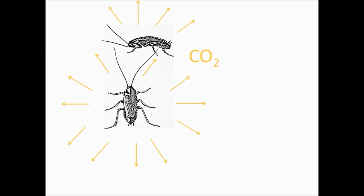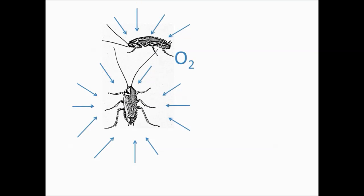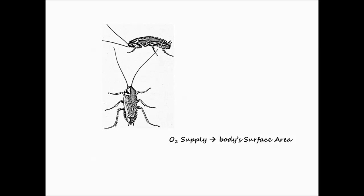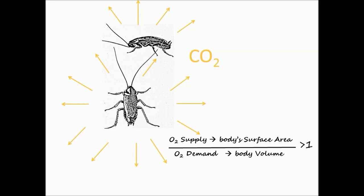Standing up is important but breathing even more so. A cockroach breathes through openings on its surface called spiracles. Hence, its oxygen supply is limited by the surface area whereas the oxygen that it needs depends on the number of cells which is its volume. This ratio has to exceed 1 and it decreases as size increases, placing an upper limit on the size of the cockroach.